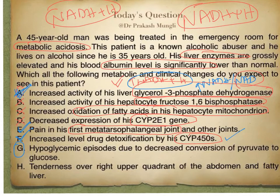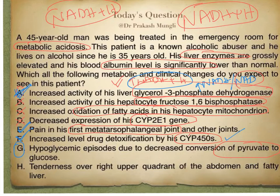Option G says hypoglycemic episodes due to decreased conversion of pyruvate to glucose. As already explained, gluconeogenesis is overall decreased in alcoholics due to increased NADH + H⁺ over NAD⁺. Pyruvate is diverted toward lactate formation rather than glucose formation, putting the person at risk of hypoglycemia. Option G is also a correct choice.